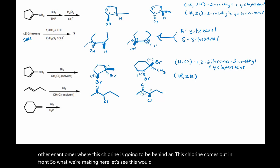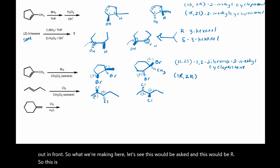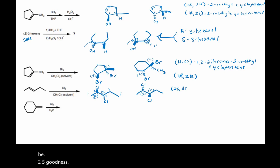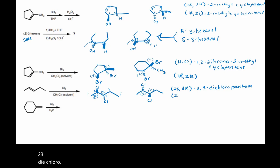This would be S and this would be R. When we name this, we name it from the left: 1, 2, 3, 4, 5. So this would be 2S,3R-2,3-dichloropentane, or it would be 2R,3S-2,3-dichloropentane. Both of those are products of this reaction.